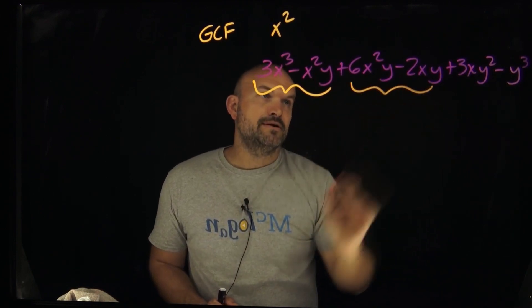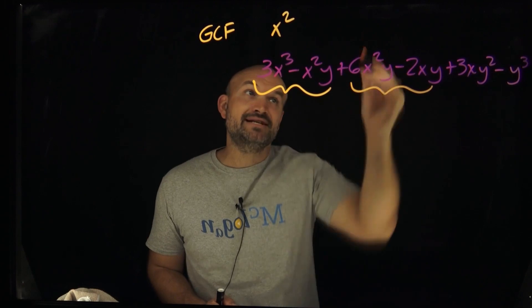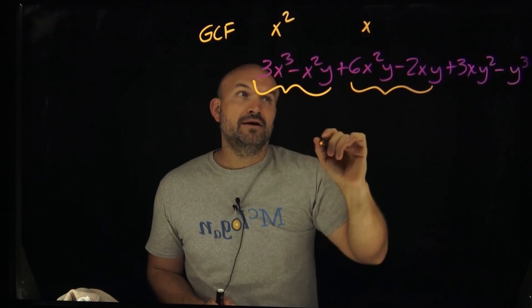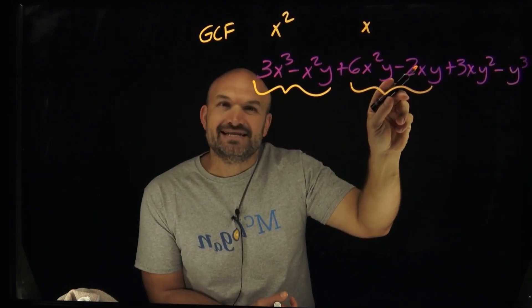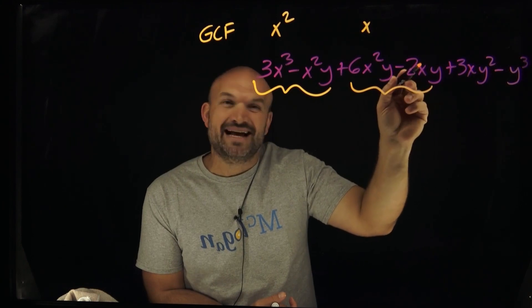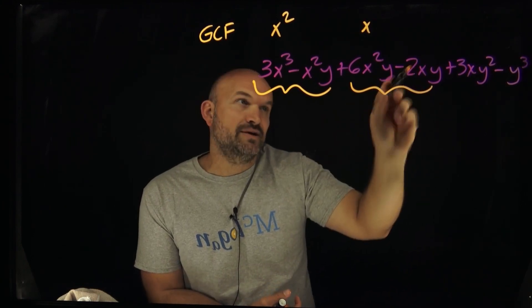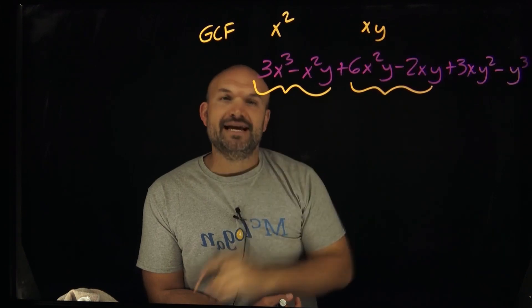What about for these two terms? Well, you can see that they both share x. Now the highest power in this case, it's just going to be an x to the first power, because I can't divide an x squared into this. Because the highest power here is already x to the first power. So therefore, that's the highest I can go here. And then they both share y. So that's going to be that GCF.